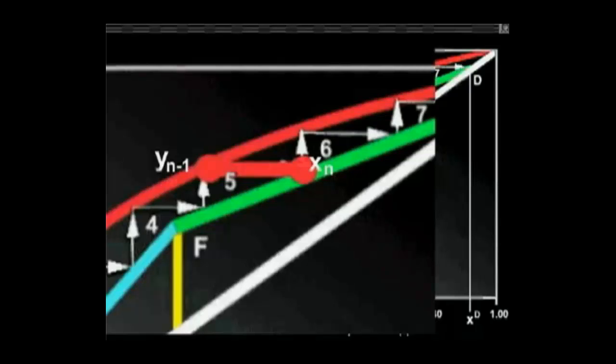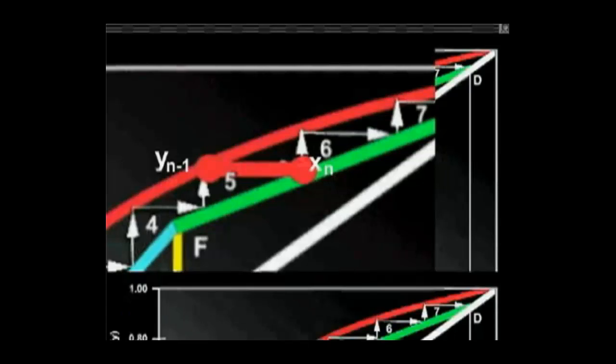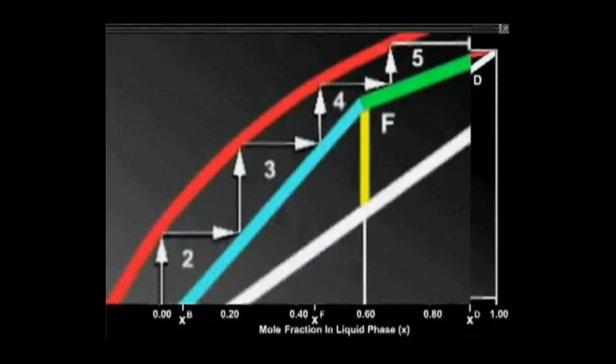If we zoom into a stage in the stripping section, we can see that the lower operating line gives the relationship between ym-1 and xm.